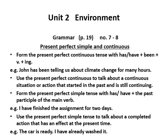We come to the grammatical item entitled present perfect simple and continuous. The present perfect simple tense is formed by 'has' or 'have' plus the past participle of the main verb. For example: 'I have finished the assignment for two days.' We use this tense to refer to a completed action or situation that has an effect at the present time — like: 'The car is ready, so I have already washed it.' 'The car is ready' is the result, and 'I have already washed it' is the present perfect tense.